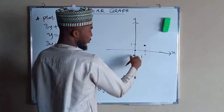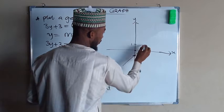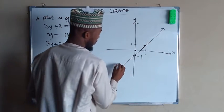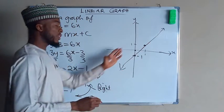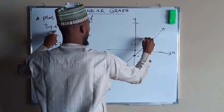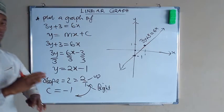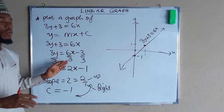So you need to use your ruler to connect these 2 dots together. So this is a line graph of the equation 3y plus 3 equals 6x. This is exactly how to plot a graph of a linear equation.